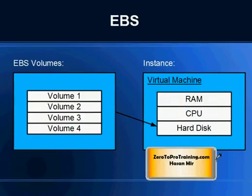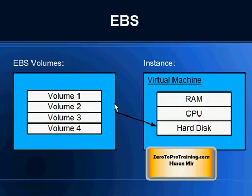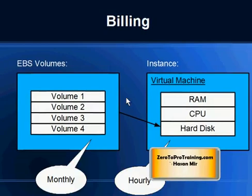EBS is not just a hard disk — it stores all your data independently of the instance. When an instance is created, the hard disk will be available within the virtual machine, but the data is sourced from what is stored on the EBS. When you remove the virtual machine, the EBS is still there holding all the data — the data in EBS is independent from the instance.